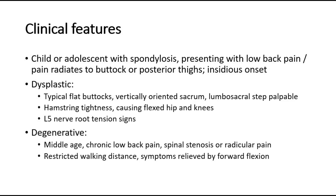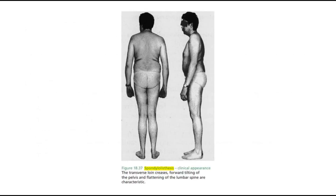This picture shows a patient with spondylolisthesis, demonstrating a transverse loin crease, forward tilting of the pelvis, and flattening of the lumbar spine, which are characteristic findings.